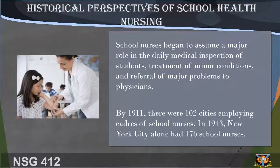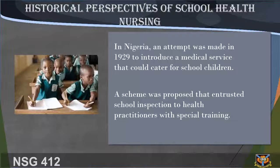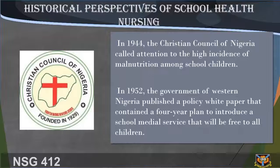By 1911 there were 102 cities employing cadres of school nurses, and in 1913 New York City alone had 176 school nurses. In Nigeria, an attempt was made in 1929 to introduce a medical service for school children. A scheme was proposed that entrusted school inspection to health practitioners with special training, with twice-yearly examinations of children throughout their school years. In 1944, the Christian Council of Nigeria called attention to the high incidence of malnutrition among school children and urged governments to inaugurate the proposed school medical service. In 1952, the government of Western Nigeria published a policy white paper containing a four-year plan to introduce a school medical service free to all children.